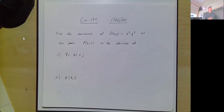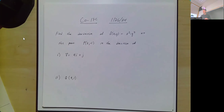Still talking about directional derivatives. This question says: find the derivative of the function f(x, y) = x² · y³ at the point (2, -1) in the direction of the vector 4i + j, or if you prefer, you can think of it as the vector (4, 1).